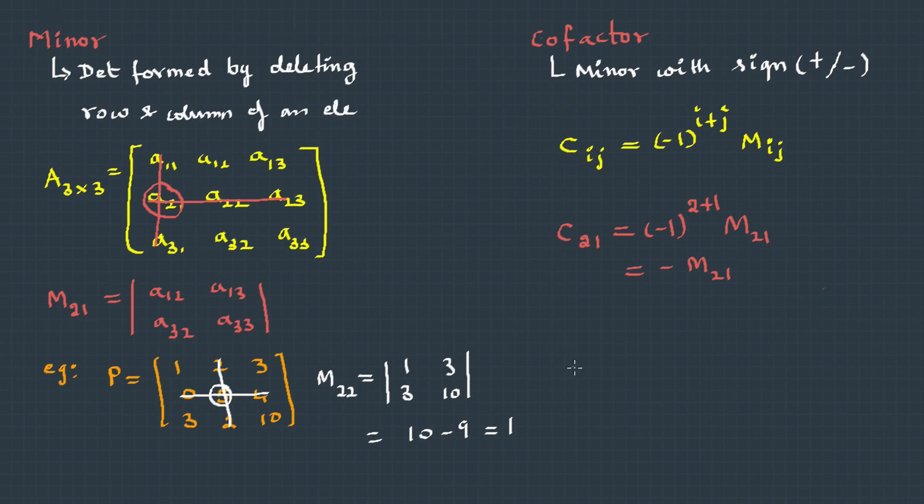We can do it this way. The cofactor of 2,2 here is (-1)^(2+2) into the minor of 2,2. 2 plus 2 is even, therefore this becomes positive. This is M22, and M22 we already found out, which is 1.